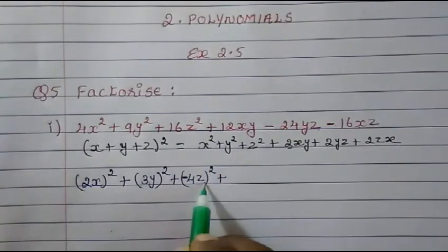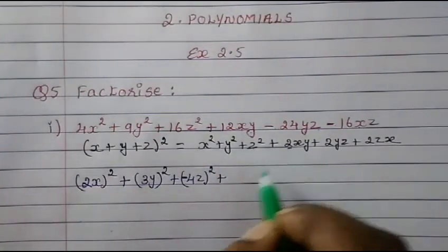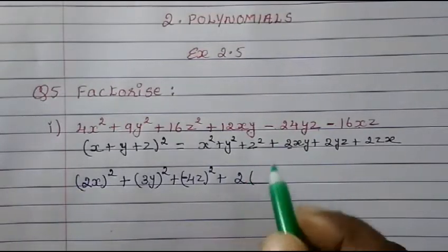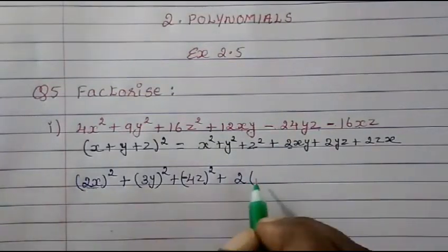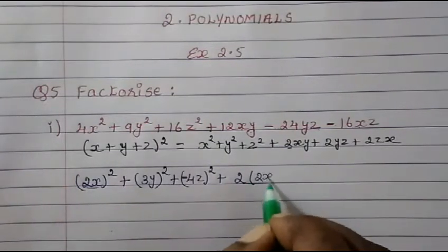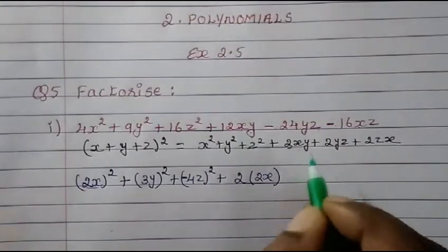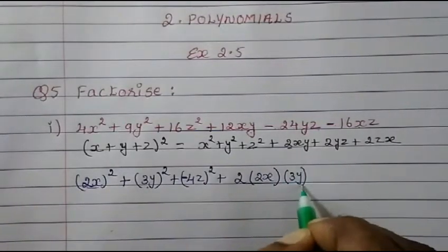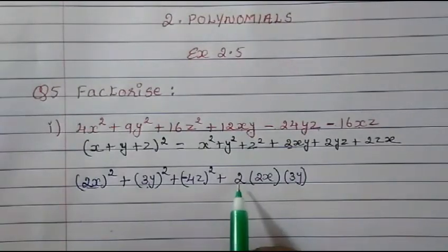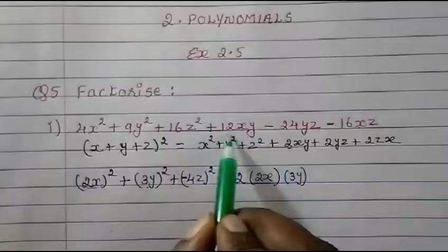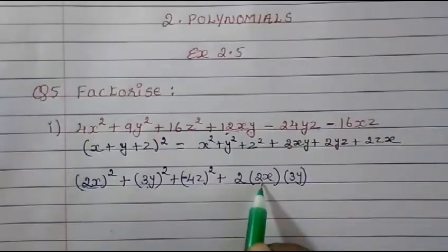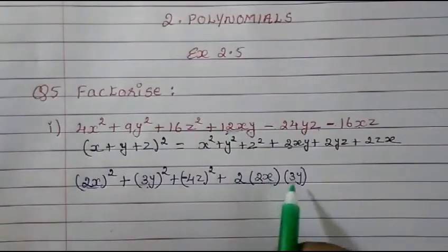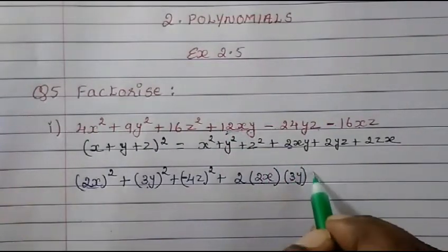Now we'll write down the 2xy term. In the place of x we have 2x, and in the place of y we have 3y. Let's check if it is balancing: 2 times 2x times 3y — 2 twos are 4, and 4 threes are 12xy. So the first middle term is balanced.